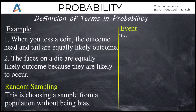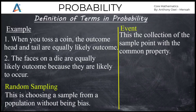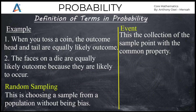The next term is event. An event is a collection of sample points with a common property — it is a subset of the sample space. For example, when a die is cast, the event E of showing even numbers will be {2, 4, 6}. Also, when two coins are tossed, the event of getting exactly one head is {head-tail, tail-head}, because those are the outcomes of getting one head and one tail.